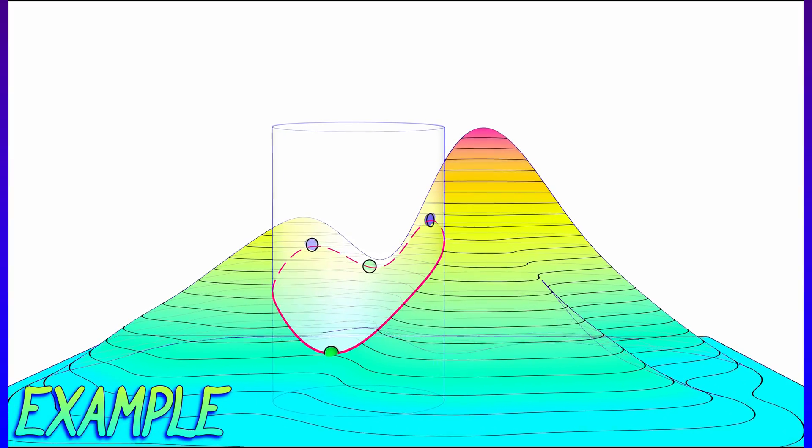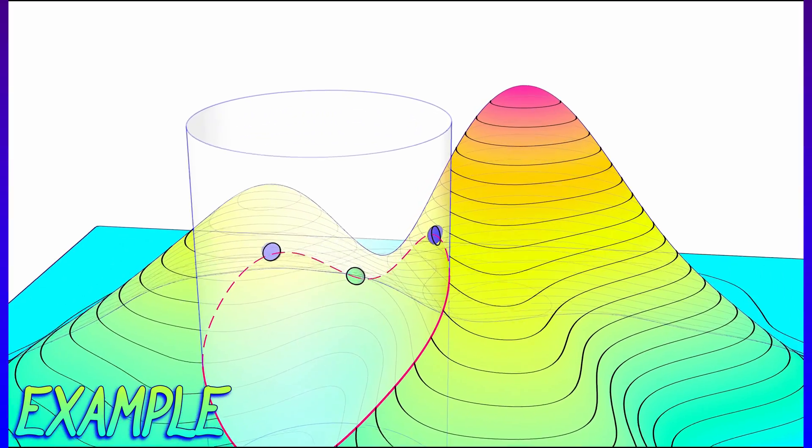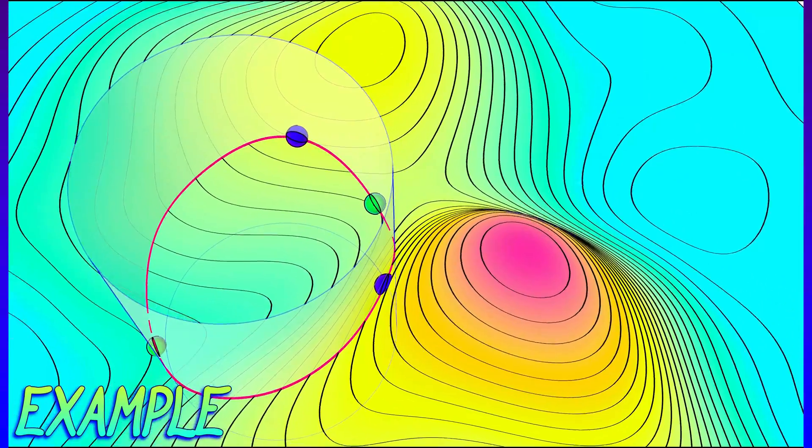Look at this function. This is a typical function, two inputs, one output, with a constraint set that is, in this case, circular.